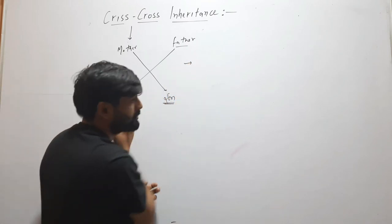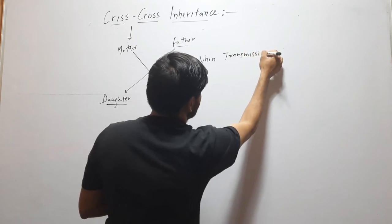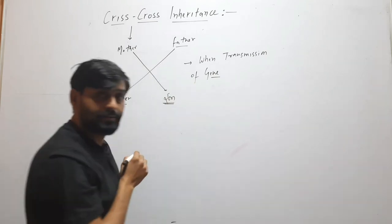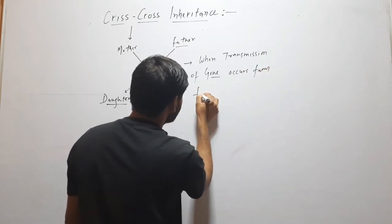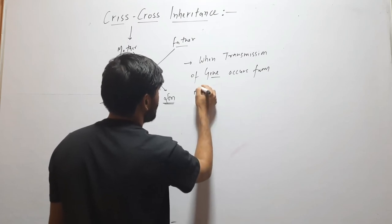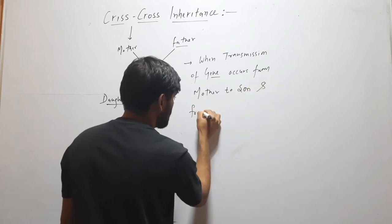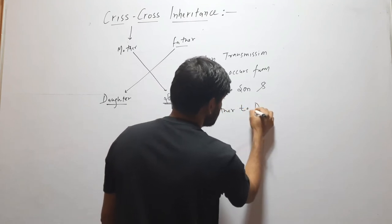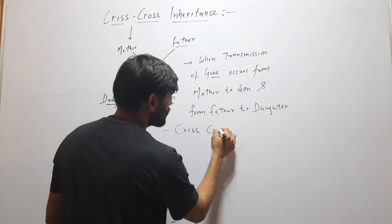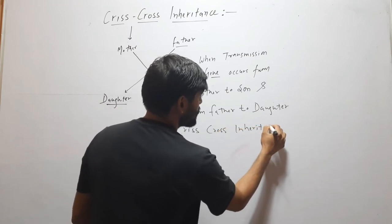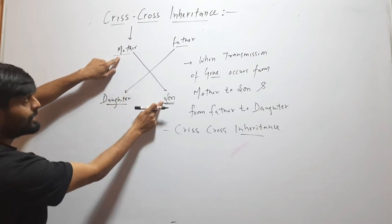Now the definition of Criss-Cross inheritance. When transmission of gene occurs from mother to son and from father to daughter, this type of inheritance is called Criss-Cross inheritance. Here you can see that transmission is occurring from mother to son and father to daughter.